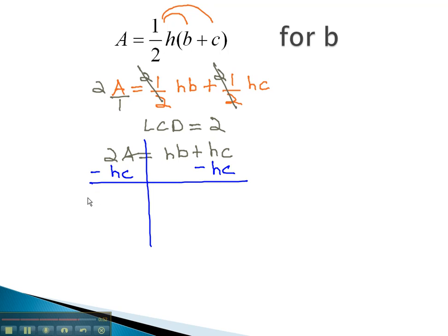On the left, we do not have like terms, so we have 2A minus hc equals hb. Finally, to get the b alone, we will divide both sides by the h.